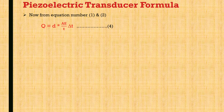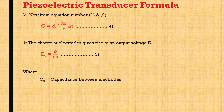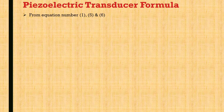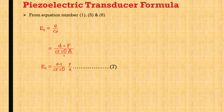From equations 1 and 2, q equals d multiplied by A·E divided by t, multiplied by delta t. The charge at the electrodes gives rise to an output voltage e0, so e0 equals q divided by Cp, where Cp is the capacitance between the electrodes. Cp equals epsilon_r · epsilon_0 · A divided by t. From these equations, e0 equals d·f divided by (epsilon_r · epsilon_0 · A / t), which simplifies to e0 equals d·t divided by (epsilon_r · epsilon_0).